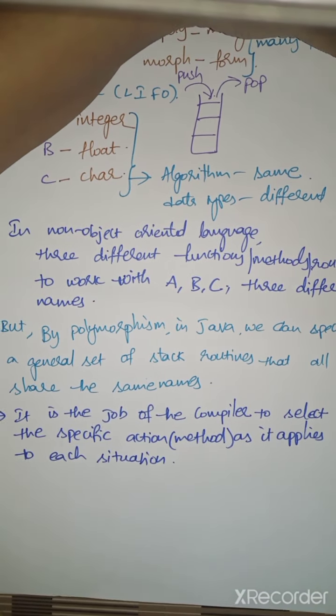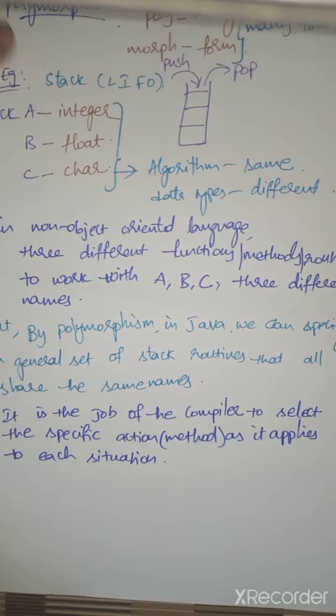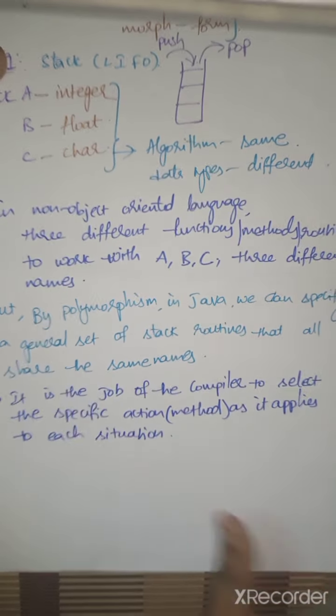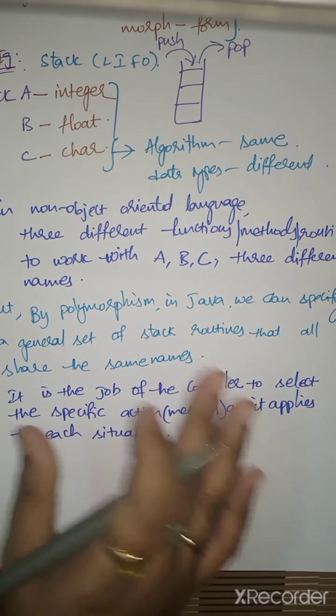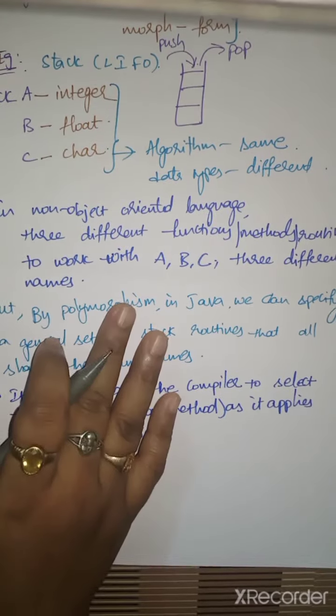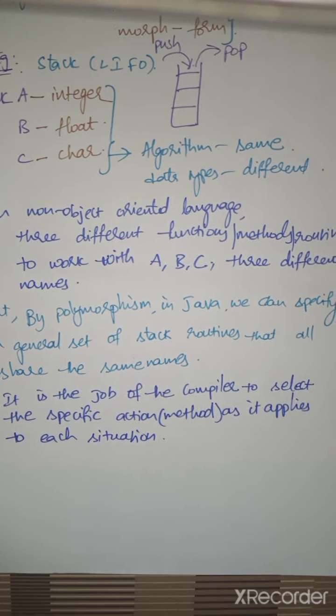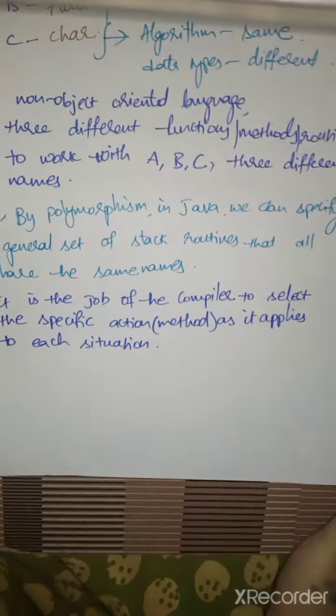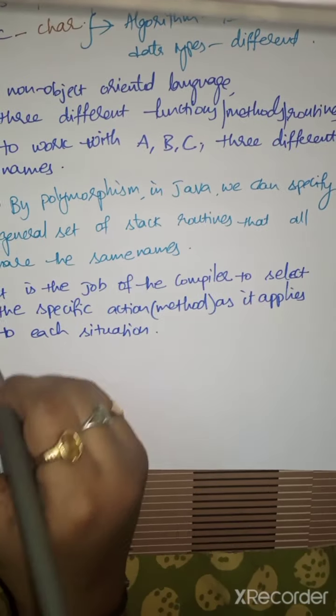This is called compile-time polymorphism. During compile time, the compiler has to decide based on the data types which method has to be executed. What is the role of the programmer? The programmer is relieved of this complexity.